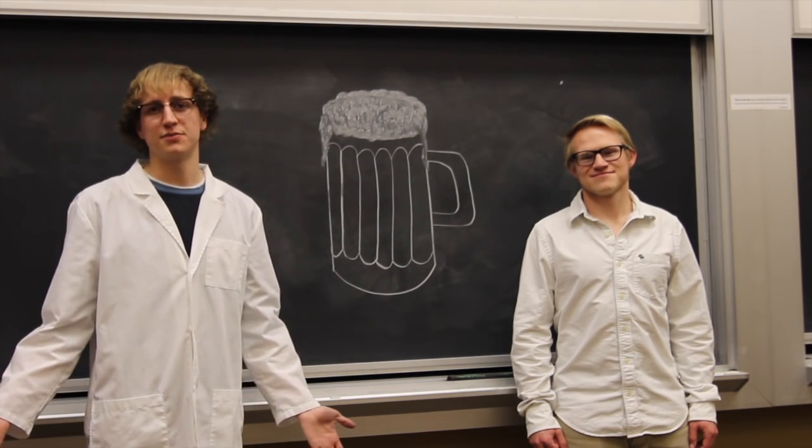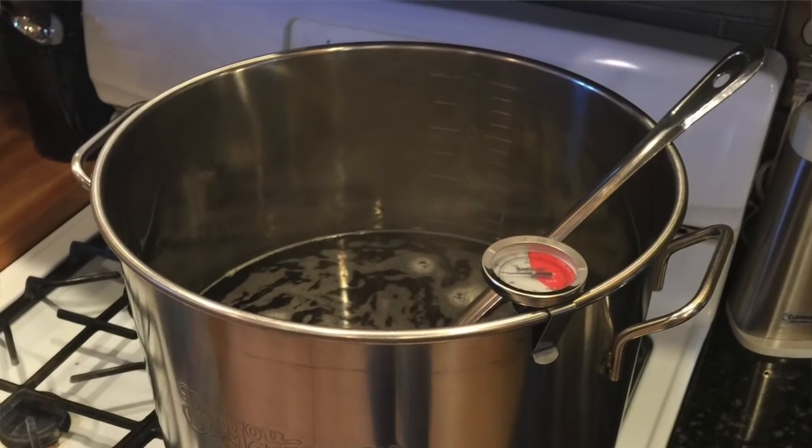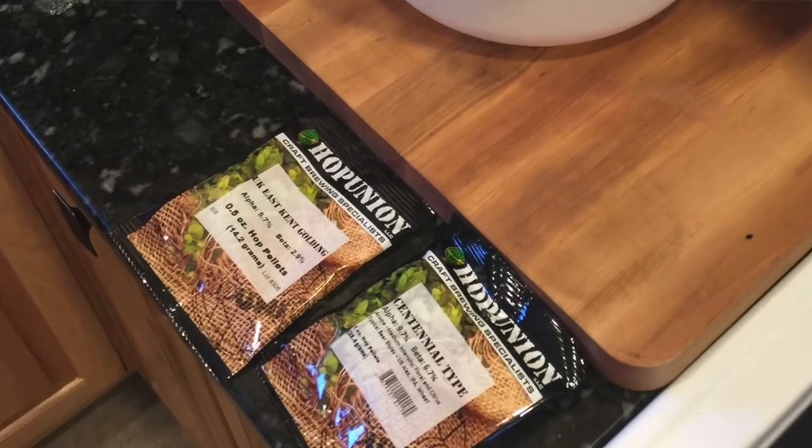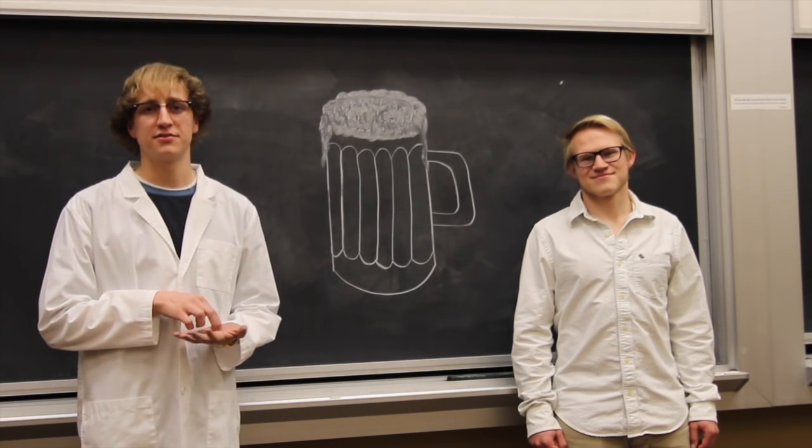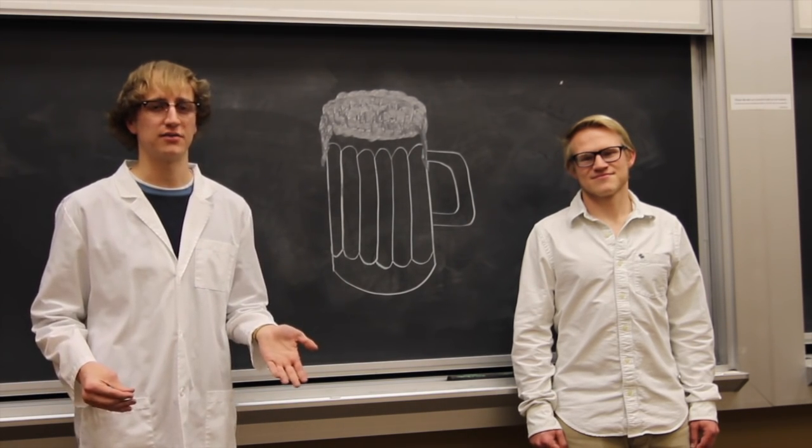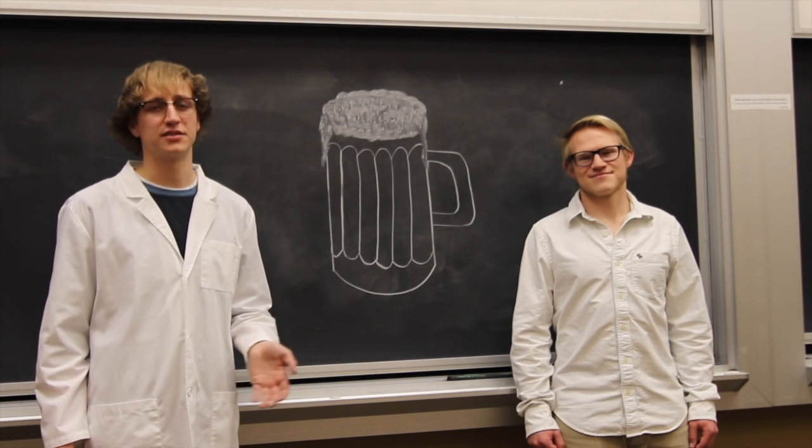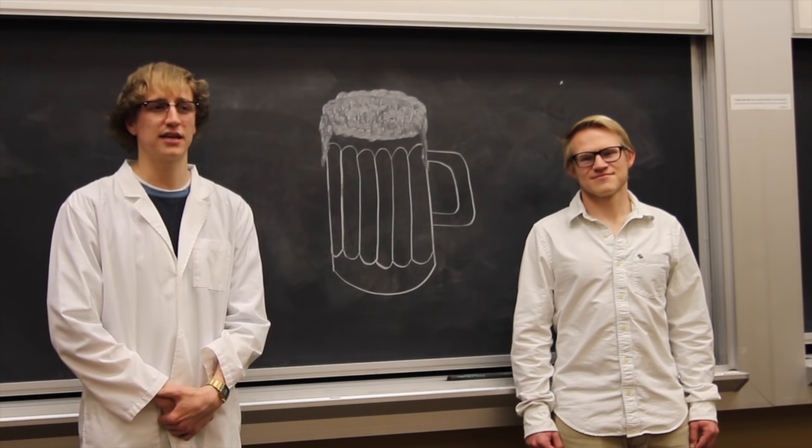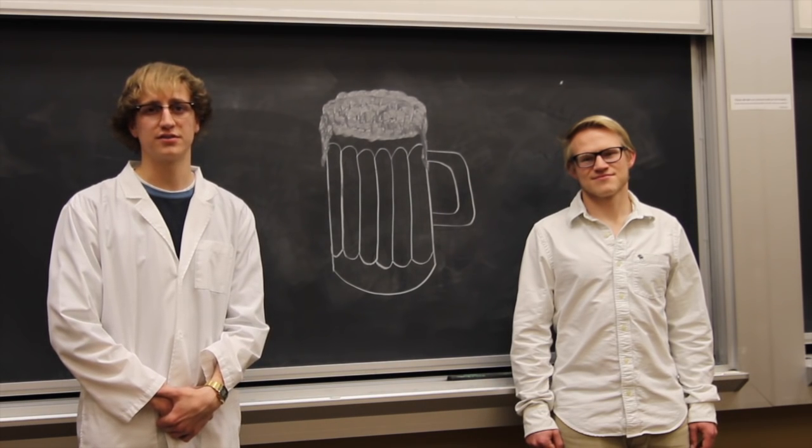The process is actually generally pretty simple. It first involves making what's called a wort. This wort consists of sterilized water that's been boiled, grain, malt, and then hops. Each of these has a specific function in the beer. The grains and hops are for flavor, whereas the malt has more of a function as the sugar that the yeast eventually added will eat. The next process is cooling the wort to room temperature, then it's put in a carboy and yeast is added. That's when the whole fermentation process begins. It's left like this for around a month, and some of the sugars are turned into alcohols in the liquid, and CO2 is released during this process.